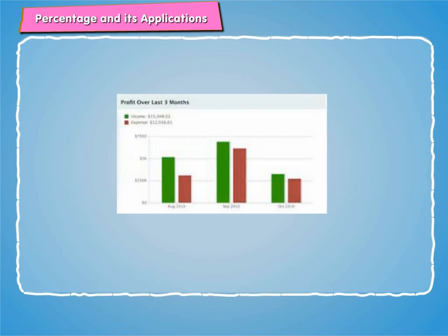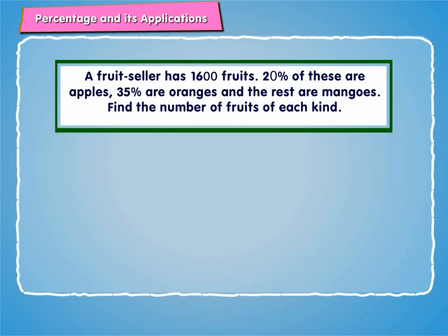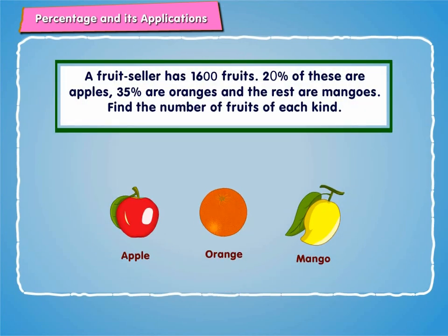Let us revise percent with the help of an example. A fruit seller has 1600 fruits. 20% of these are apples, 35% are oranges and the rest are mangoes. Find the number of fruits of each kind.